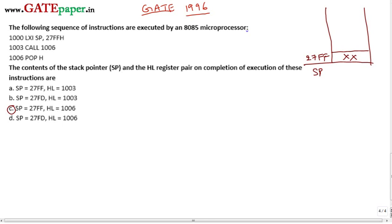The next instruction to the call instruction is nothing but the present address of program counter. The present address of program counter is loaded into stack and the program counter is loaded with the new address which is specified in the call instruction. This is the address of next instruction. Since call is a 3-byte instruction, address of next instruction is 1006.